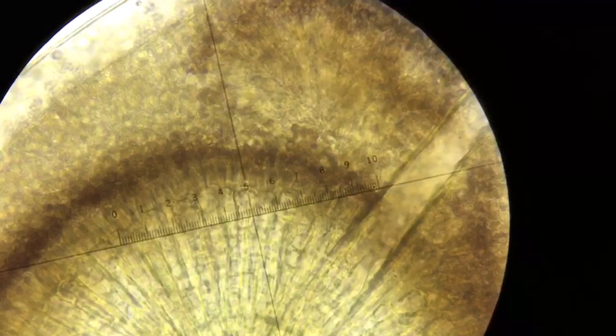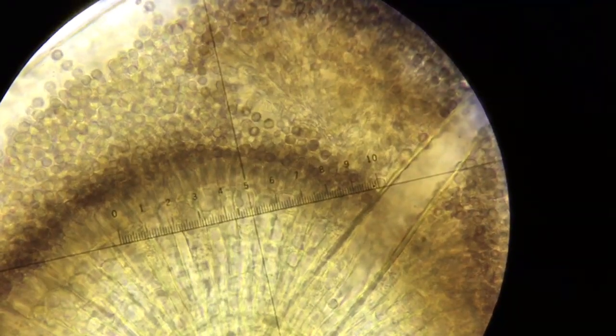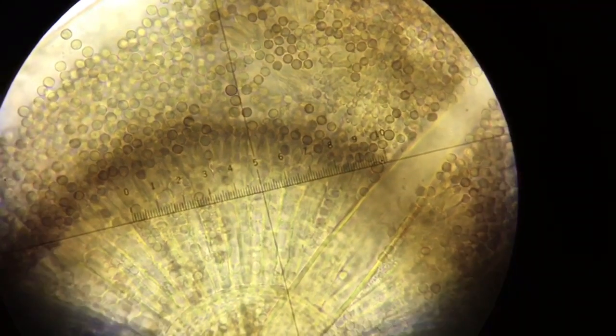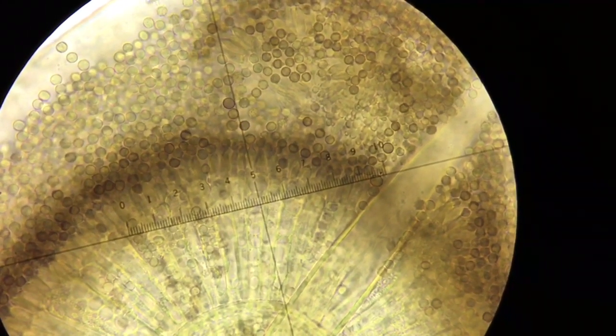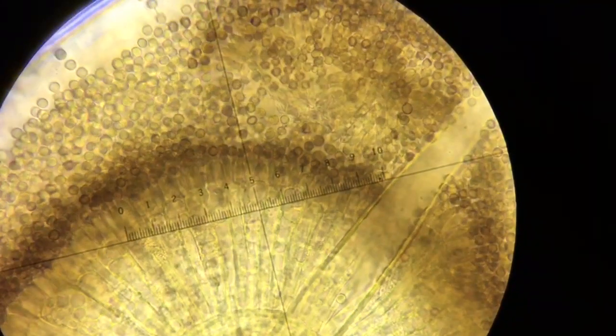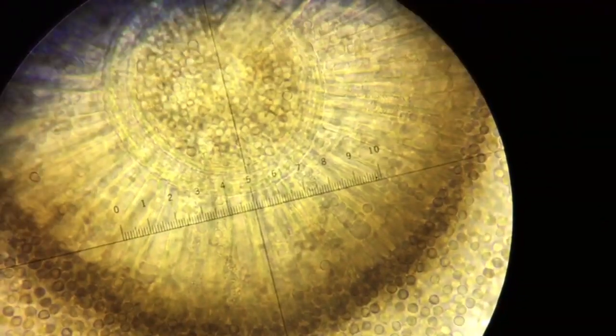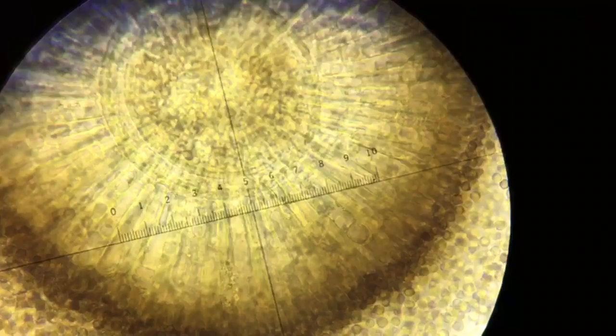In Aspergillus Niger, this is called a biseriate conidiophore. A uniseriate conidiophore does not have those base structures; it only has the phialides. The base structures are called metulae, and then you have the phialides that come off of it.